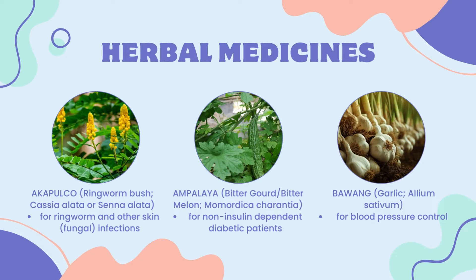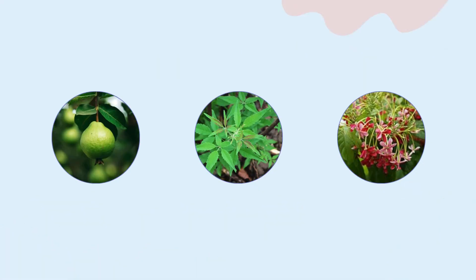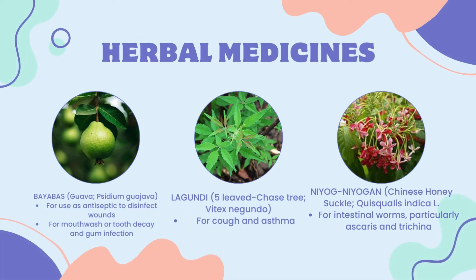Bawang, or garlic, is good for blood pressure control. Bayabas, or guava, is used as an antiseptic to disinfect wounds, as a mouthwash, and for tooth decay and gum infection. Lagundi, or the five-leaf chaste tree, also known as Vitex negundo, is used for cough and asthma. Niyognogan, or Chinese honeysuckle, is used for intestinal worms, particularly Ascaris and Trichina.